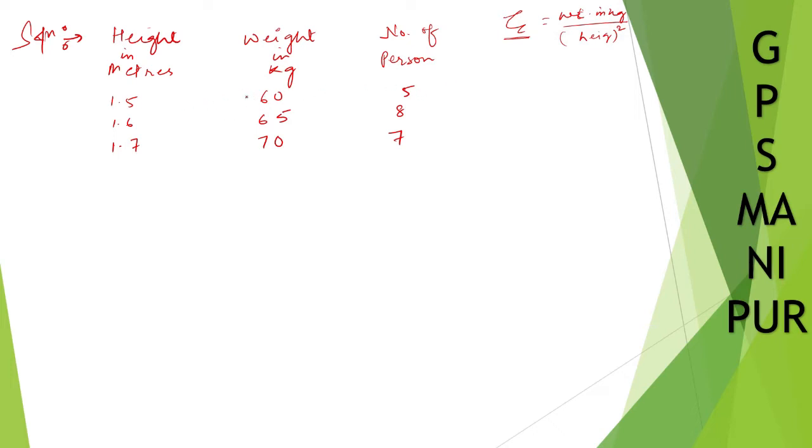So weight in kg, it is 60. So 60 divided by 1.5 square, 1.5 whole square. So what will be the answer? The answer will be 60 divided by 1.5 square, it is 2.25. And if you divide this number by 2.25, it will be 26.66.